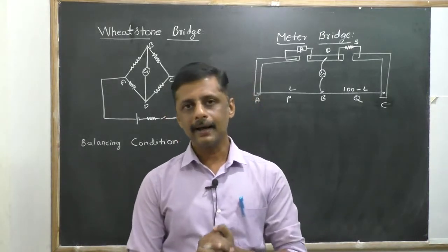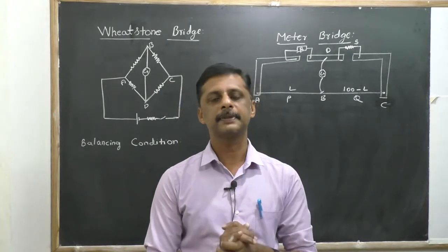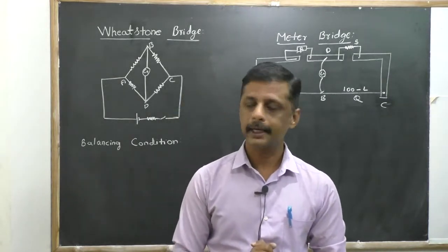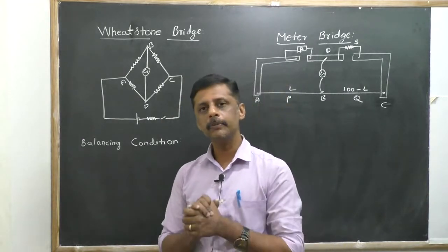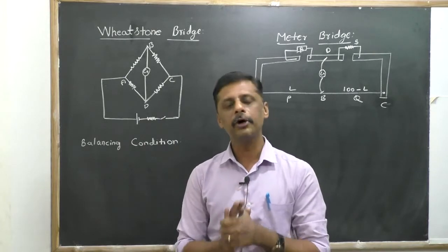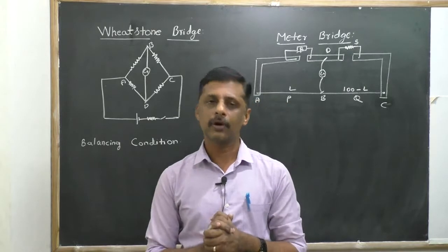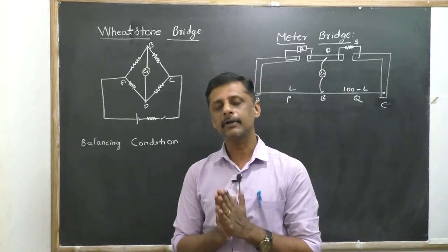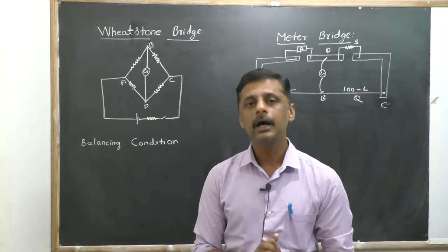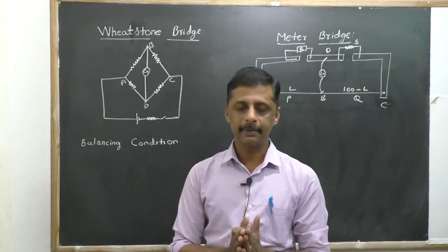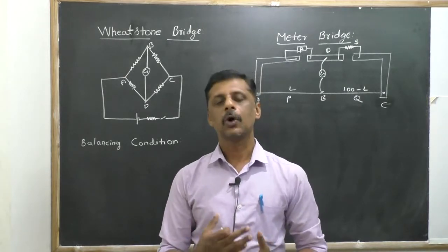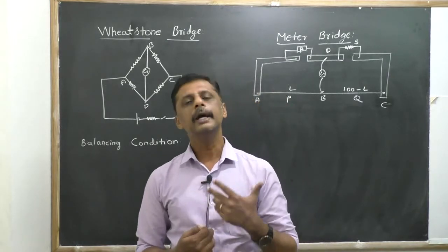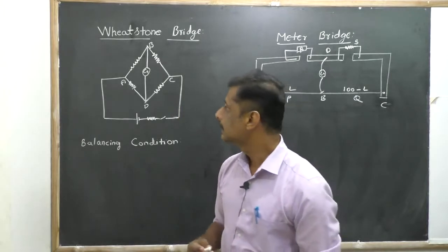Hello students, namaste. In this class we are going to discuss the last part of the synopsis of the current electricity chapter, which is about the Wheatstone network and important measuring instruments. A Wheatstone bridge is a network consisting of four resistors connected in the form of a quadrilateral. By using this bridge or network, you can find out the unknown resistance.